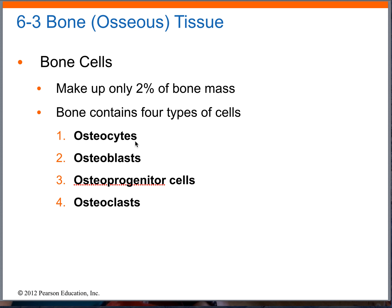We said what were the four? Osteocytes, osteoblasts, osteoprogenitor cells, and osteoclasts.